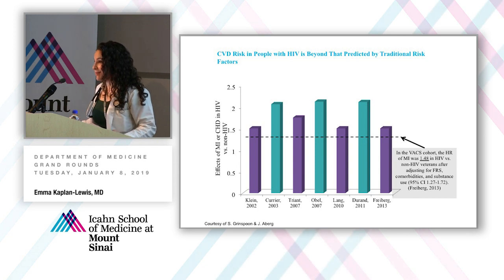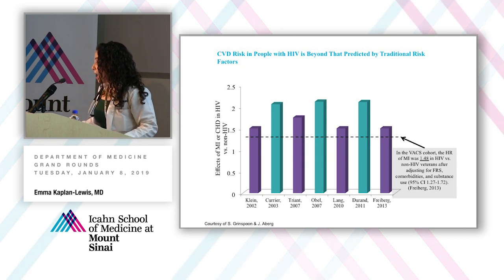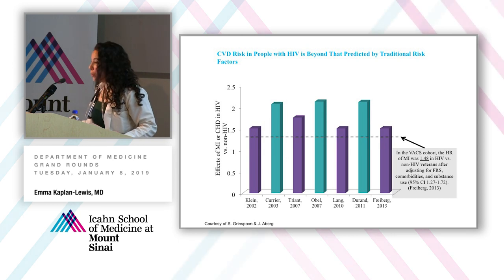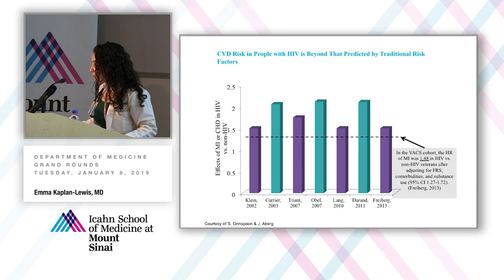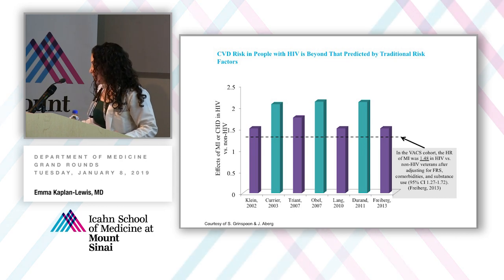So how much is the excess risk in people with HIV? There are numerous cohort studies looking at rates of incident MI in people with HIV compared to those without, controlling for traditional risk factors. Generally the risk has been shown to be 1.5 to 2 times that of the general population. In 2013, the VAX cohort — looking at veterans with HIV compared to those without — showed a hazard ratio for MI of 1.48 in people with HIV. They adjusted for Framingham risk score, comorbidities, and substance use, and still found elevated MI risk.